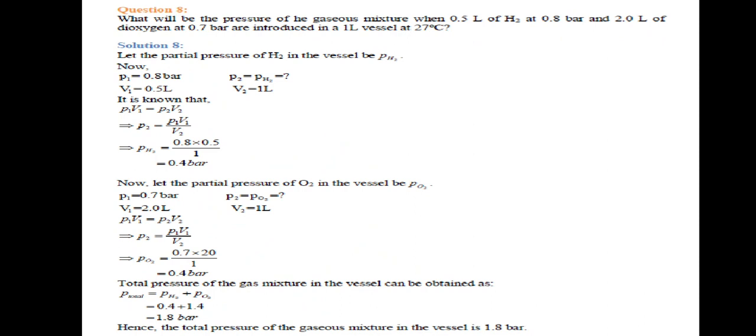Now, let the partial pressure of O2. For O2, we have P1 which is 0.7 and V1 which is 2. P2 needs to be found, V2 is 1 liter. So P2 equals P1 times V1 upon V2, which is 0.7 times 2.0 upon 1, which equals 1.4 bar. Total pressure PH2 plus PO2 equals partial pressure of both. So 0.4 plus 1.4 equals 1.8. So total pressure exerted will be 1.8 bar.